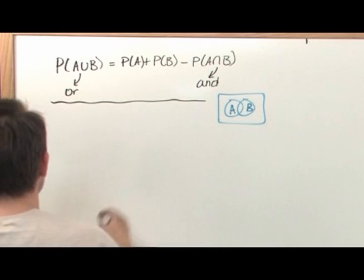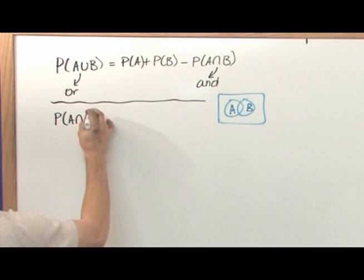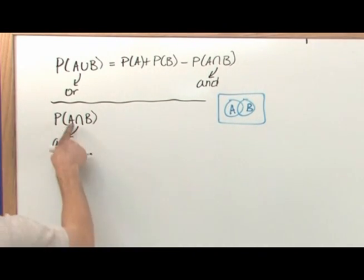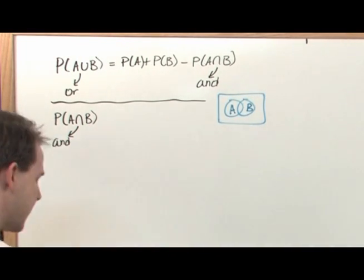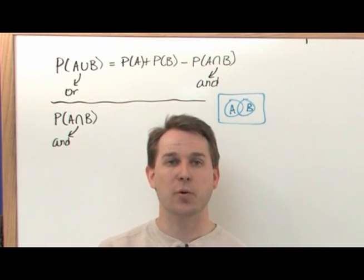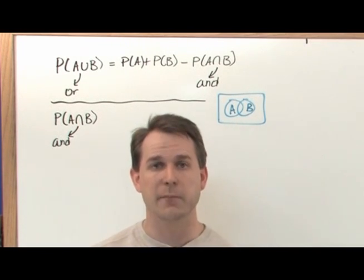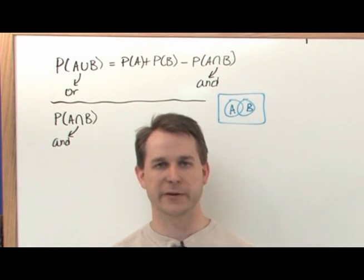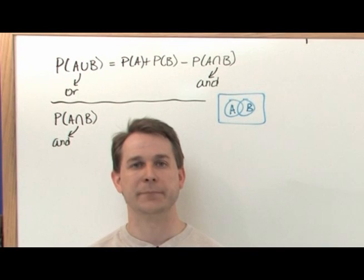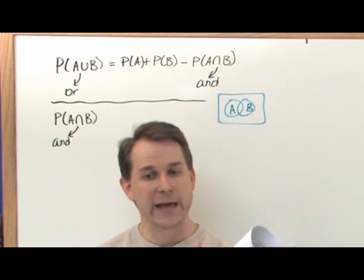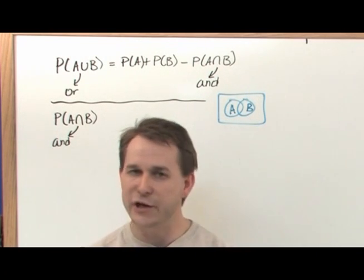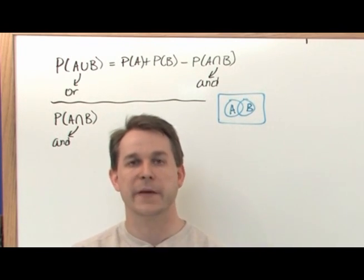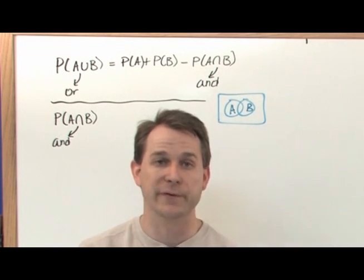Now we're going to try to find the probability of A and B. We'll have event A and event B, and I want to know what's the probability of both of them happening at the same time. Whereas before with A or B the total probability should be the sum of individual probabilities, if I'm interested in A and B happening simultaneously it makes sense the total probability should be lower — because now A alone isn't good enough and B alone isn't good enough; they both have to line up and happen at exactly the same time.